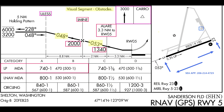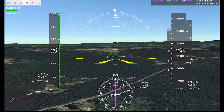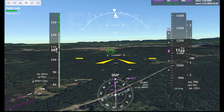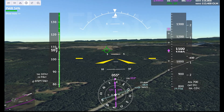It's important to understand that LP minimums are still to an MDA. This is a 2D non-precision approach, not a procedure with approved vertical guidance to a DA. That said, my GTN 750XI provides an advisory vertical descent path, which helps me fly a stable descent to the runway.